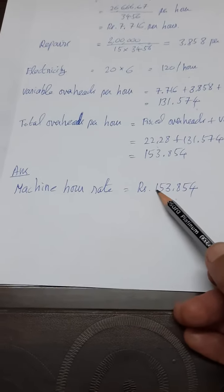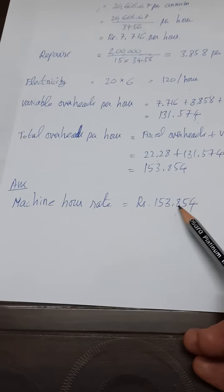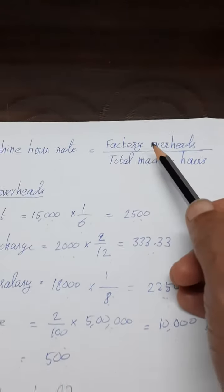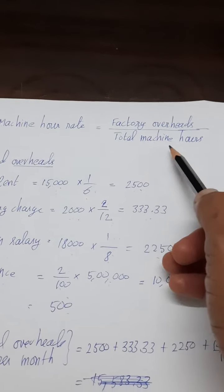This is how you have to find the machine hour rate. What is machine hour rate? Machine hour rate is nothing but factory overhead divided by total machine hours.